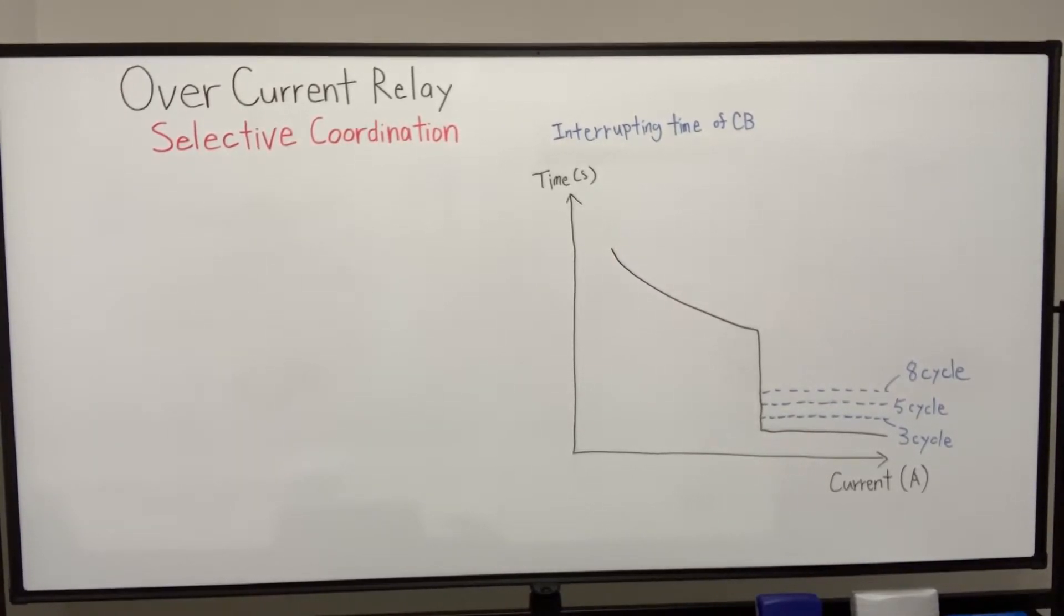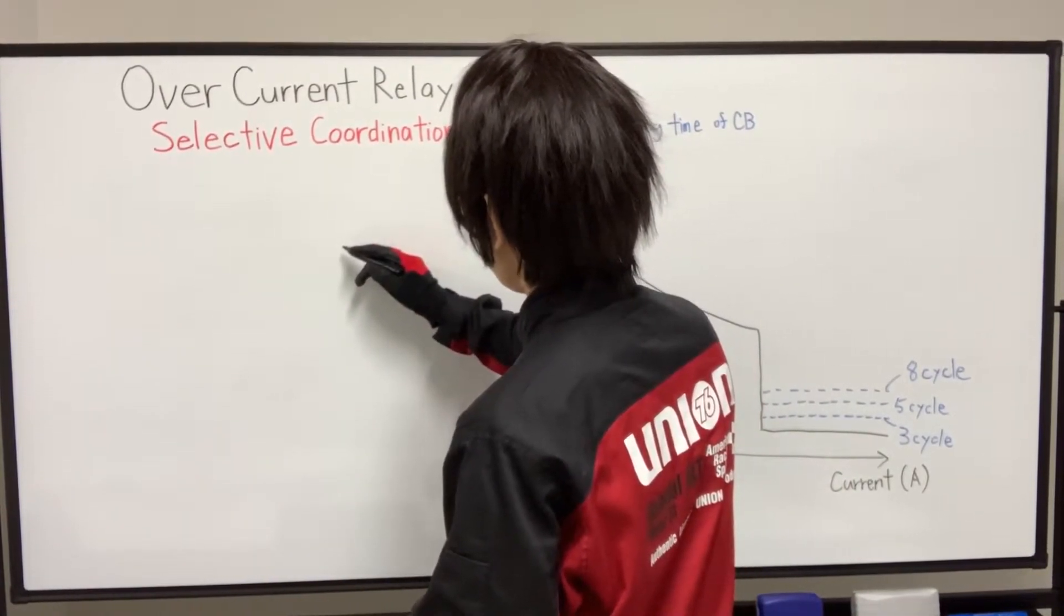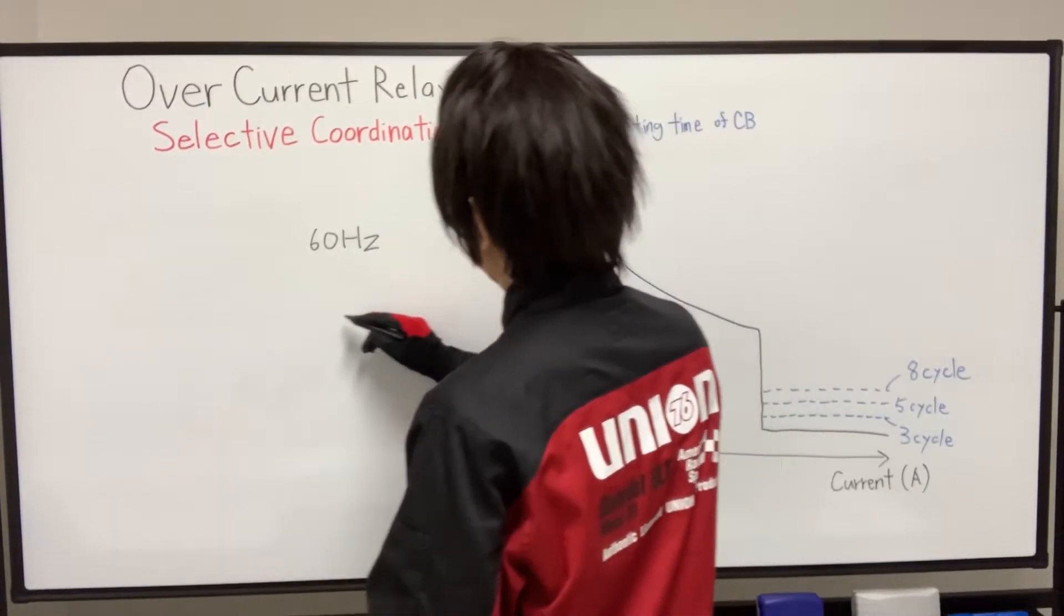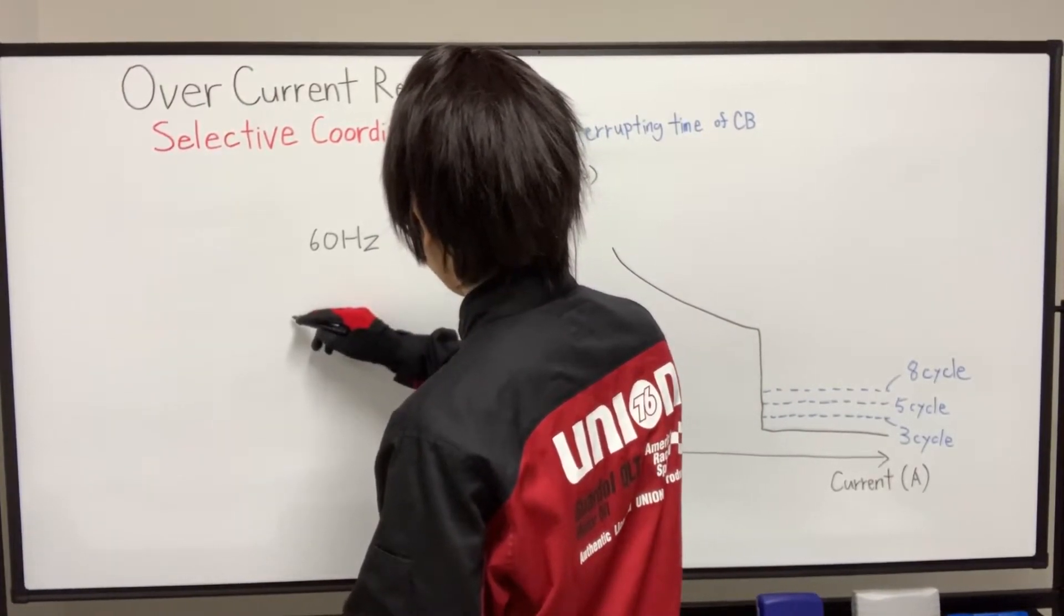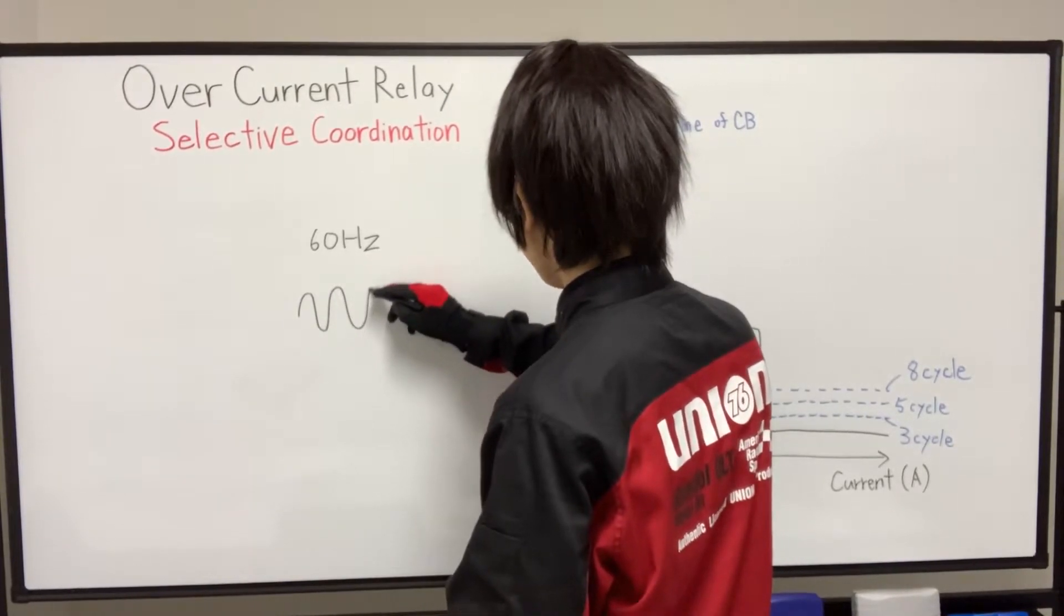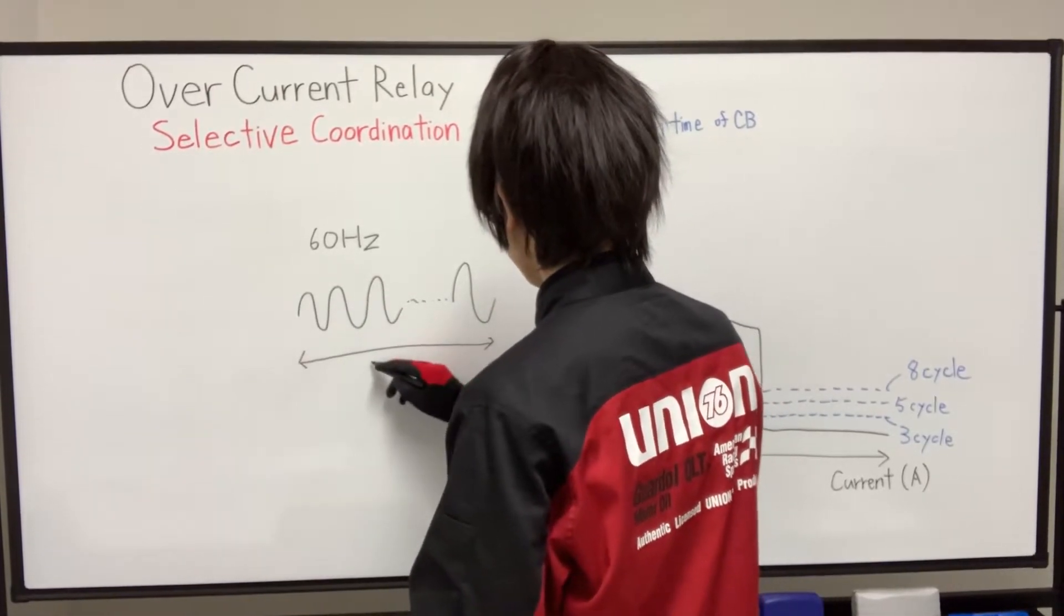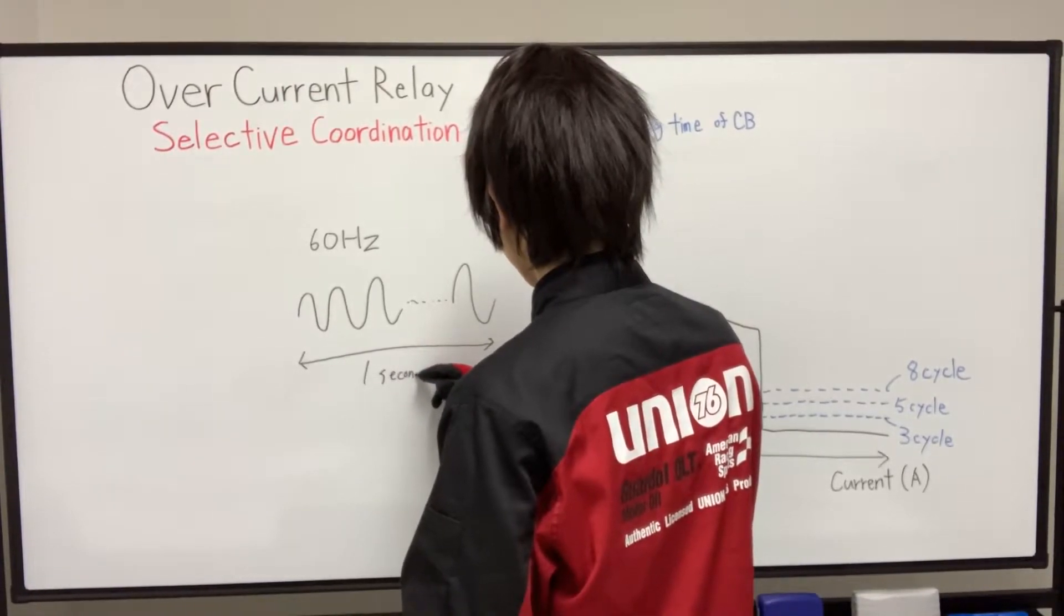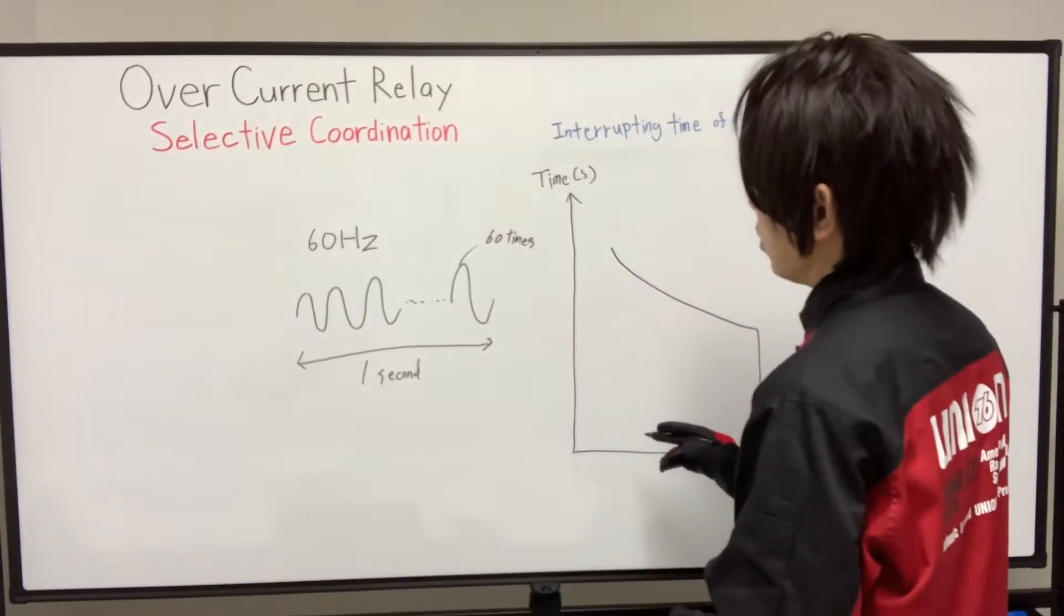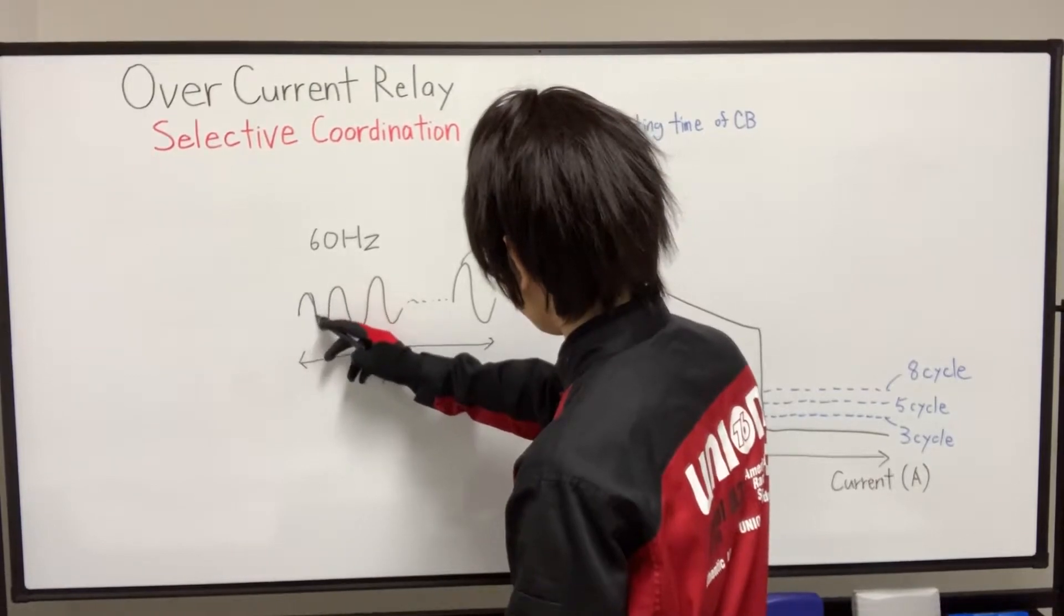Cycles mean alternating current has a frequency like 50 Hz or 60 Hz. In 60 Hz, I mean AC around 60 times per second. So in 60 Hz, 60 times, that means this is 60 Hz. And one cycle is just this one round, just one round. This is one cycle.